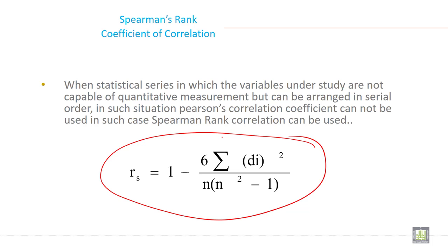You can use this formula when there are two conditions: either both variables are in qualitative terms, or one variable is qualitative and one variable is in quantitative form. Then you can use this Spearman Rank Correlation.